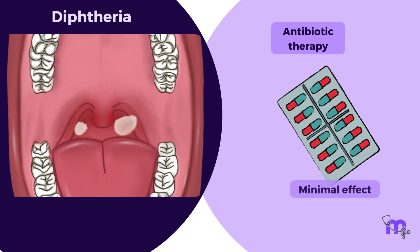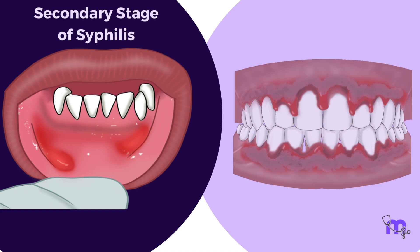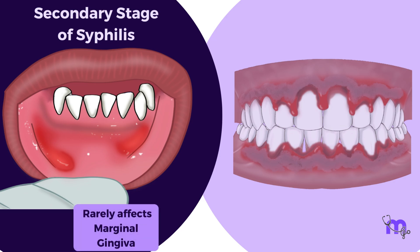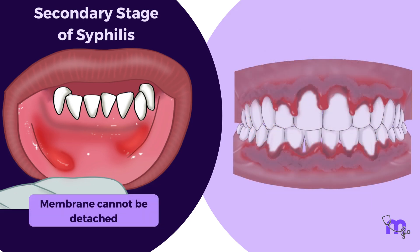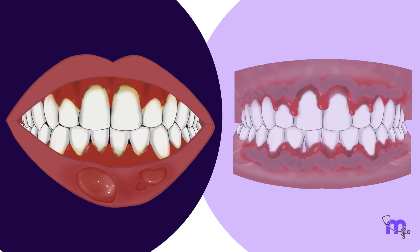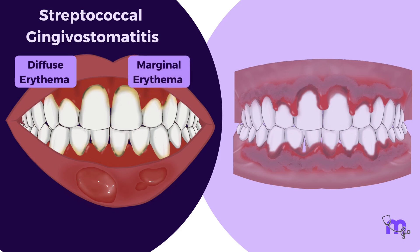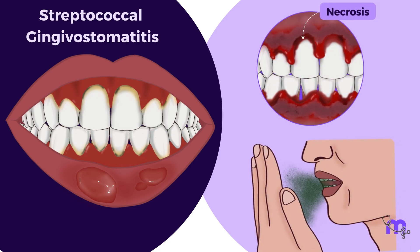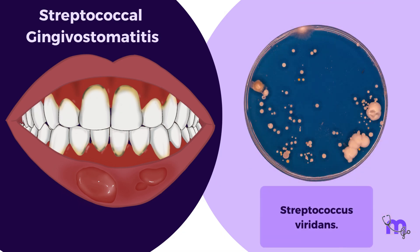Unlike in ANUG, antibiotic therapy has minimal effect in diphtheria. The fifth differential is secondary stage of syphilis, which can affect part of the mouth but rarely the marginal gingiva. Bacterial smears reveal Treponema pallidum. The membrane cannot be detached, and minimal pain is experienced. The sixth differential is streptococcal gingivostomatitis, which shows diffuse erythema of gingiva and other areas of oral mucosa, or may be confined to marginal erythema. Necrosis of the gingival margin and fetid odour are not present. Bacterial smears show Streptococcus viridans.